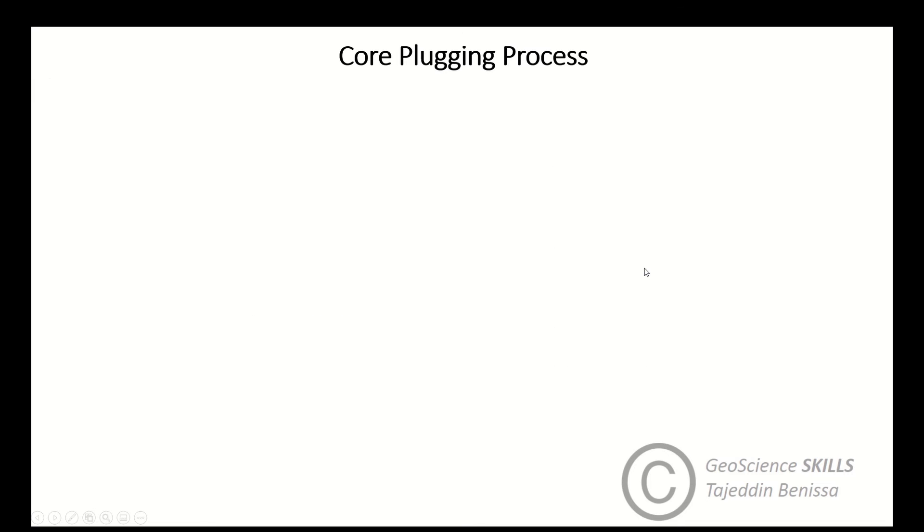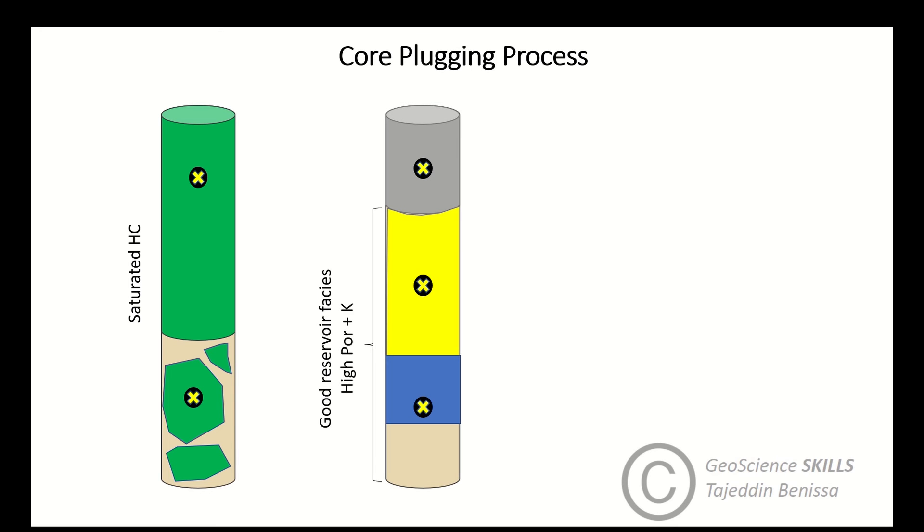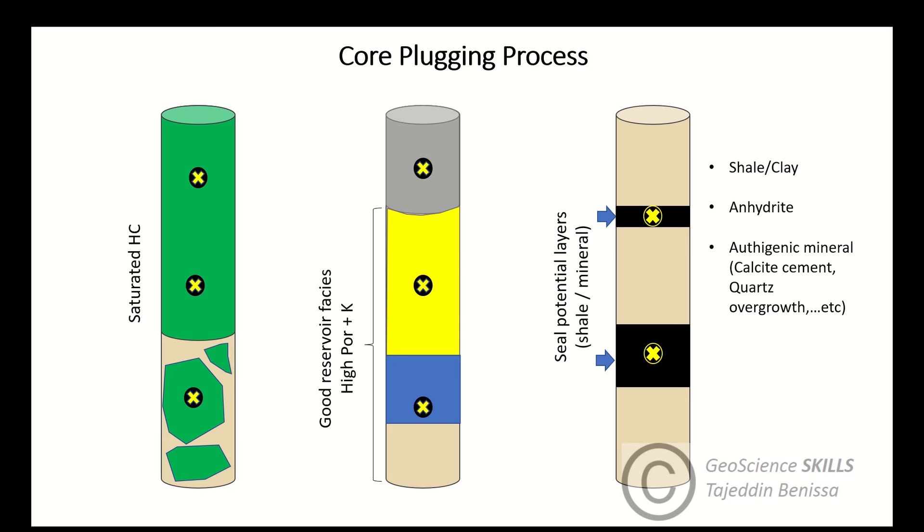Plug selection must target areas of interest such as intervals of saturated hydrocarbon, or good reservoir facies which are characterized by high porosity and permeability, or intervals which represent potential seals for hydrocarbon flow either horizontally or vertically, such as shale or clay or anhydrite, or any diagenetic authigenic minerals like calcite cement or quartz overgrowth.